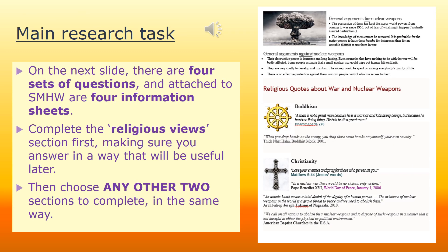This now is your main information-gathering research task about nuclear weapons and WMDs. On the next slide there are four sets of questions, and attached to Show My Homework are four information sheets. The titles of the information sheets should make it clear which questions they go with. Everyone needs to start with the questions called 'Religious Views' first, and answer in a way that will be useful later — please copy the question out or include part of it so it's clear in your notes. Then choose any other two sections to complete in the same way, using the information sheets on Show My Homework.